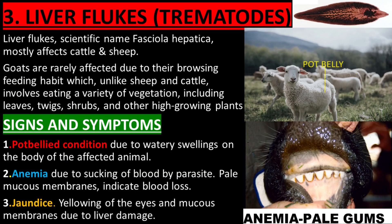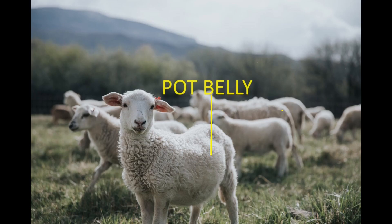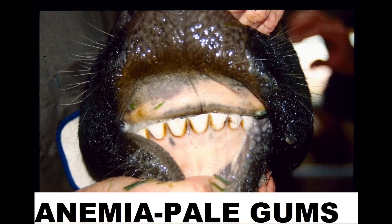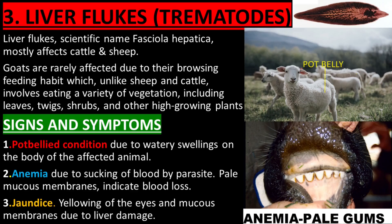Signs and symptoms of liver fluke attack: potbellied condition due to watery swellings on the body of the affected animal. Anemia due to sucking of blood by the parasite. Pale mucus membranes indicate blood loss. Jaundice, which is yellowing of the eyes and mucus membranes due to liver damage.